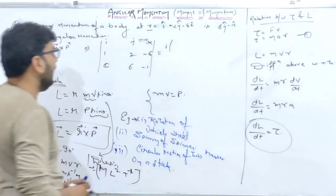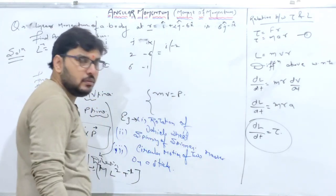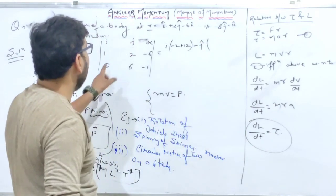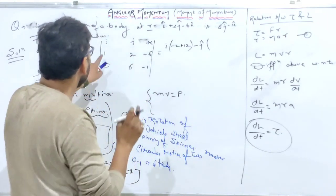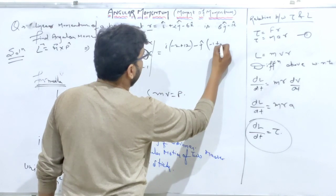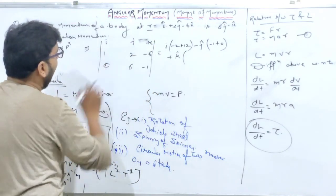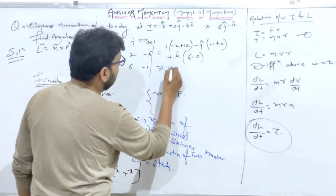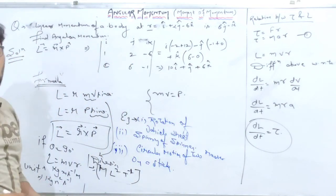You are given r and p, so angular momentum L = r × p. Make the matrix with i, j, k. Write r's coefficients: 1, 2, −6. Write p's coefficients: 0, 6, −1. For i: (2×−1) − (−6×6) = −2 + 36 = ... wait, recalculating: i component = (2×−1) − (−6×6) gives −2 + 36; minus j: (1×−1) − (−6×0) = −1; plus k: (1×6) − (2×0) = 6. Final answer: L = 10i cap + j cap + 6k cap. This is the angular momentum of the body.